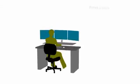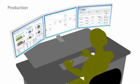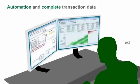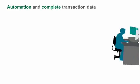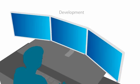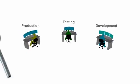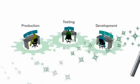Throughout the application lifecycle, people look at things differently. Automation and complete transaction data help eliminate disputes and make production, testing, and development all more productive.